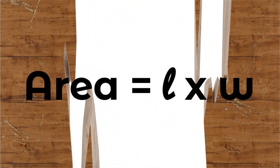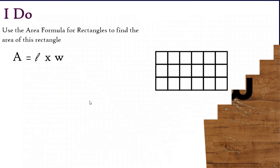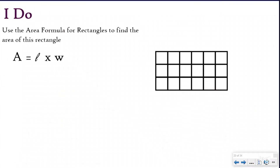Since we can use the dimensions of length and width to find the area every single time, just like we use them to find the product of an array, that leads us to our area formula: Area equals length times width. This is the formula — the rule that will always work. We're going to take one dimension, our length, and multiply it by the other dimension, our width, reading that multiplication sign as 'groups of.' Let's take a look at an 'I do' problem using this formula.